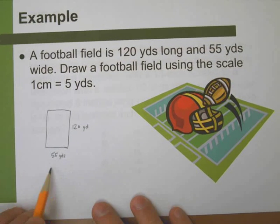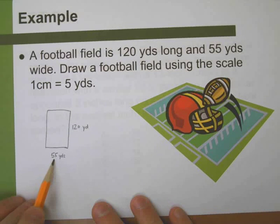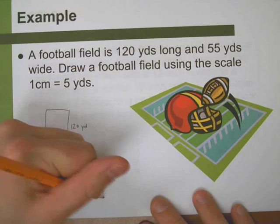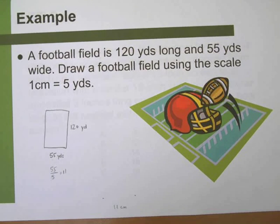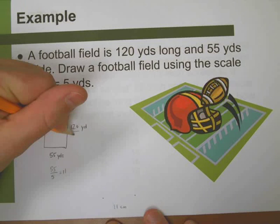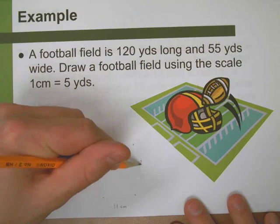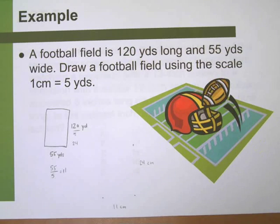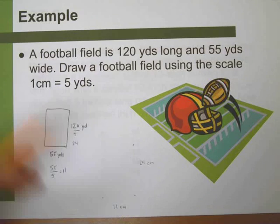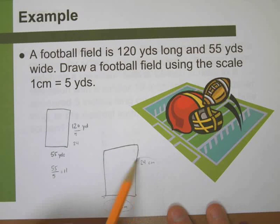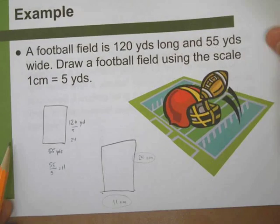The first thing we need to figure out is how many centimeters wide our drawing should be. Well, every 5 yards is 1 centimeter. If I take 55 and divide it by 5, that gives me 11. That means I need 11 centimeters for the width. If I take 120 and divide it by 5, 120 divided by 5 is 24. So I need a height of 24 centimeters for my drawing. I'll trust you to be able to draw a rectangle that's 11 centimeters wide and 24 centimeters tall. That's the idea - drawing to scale with those dimensions: 11 and 24.